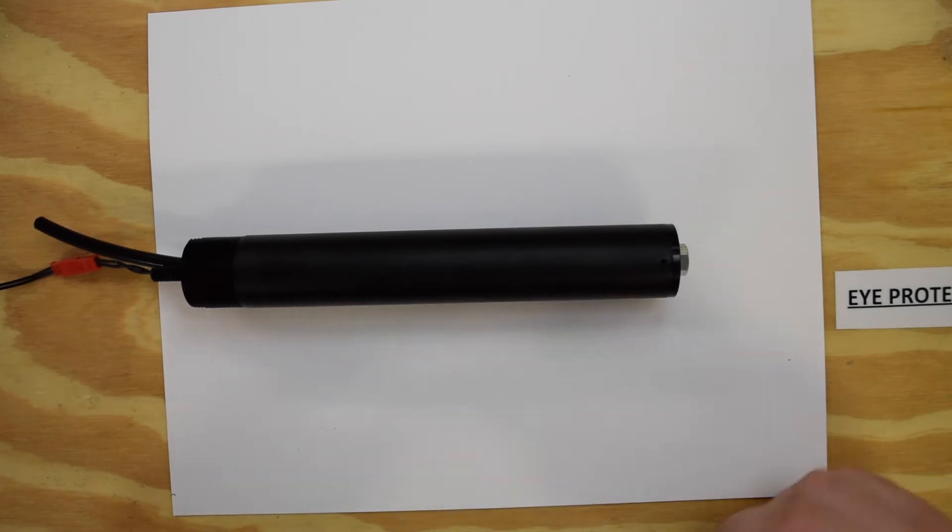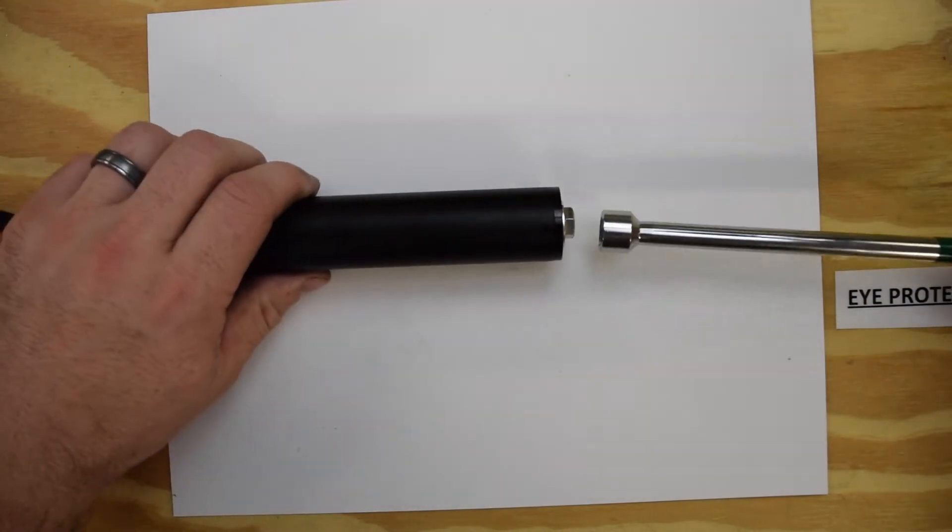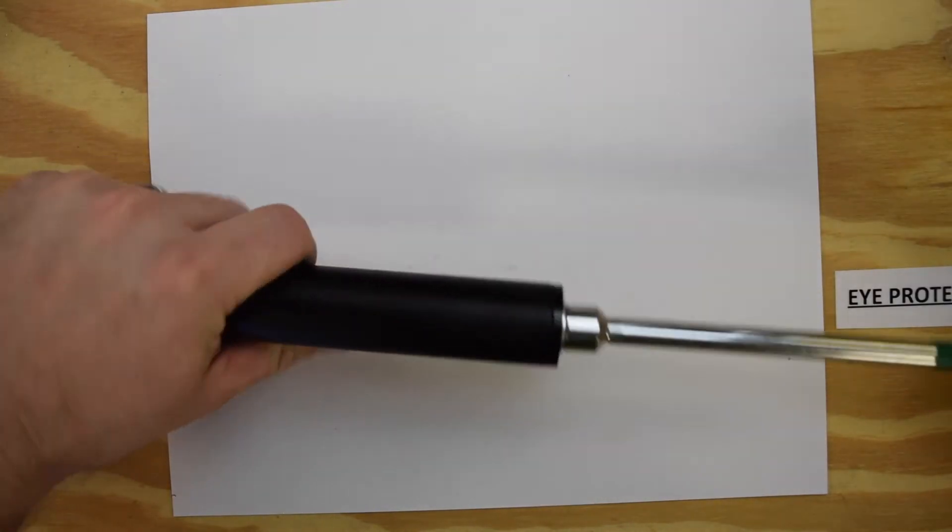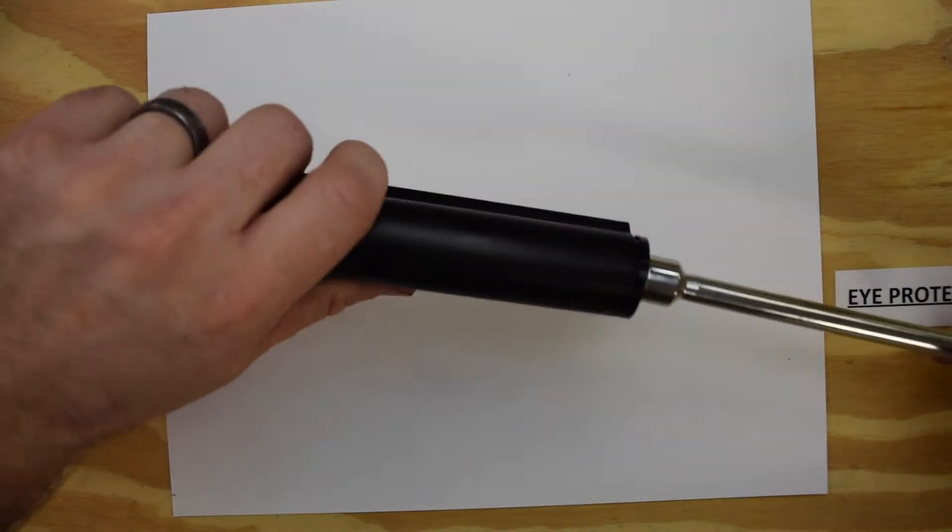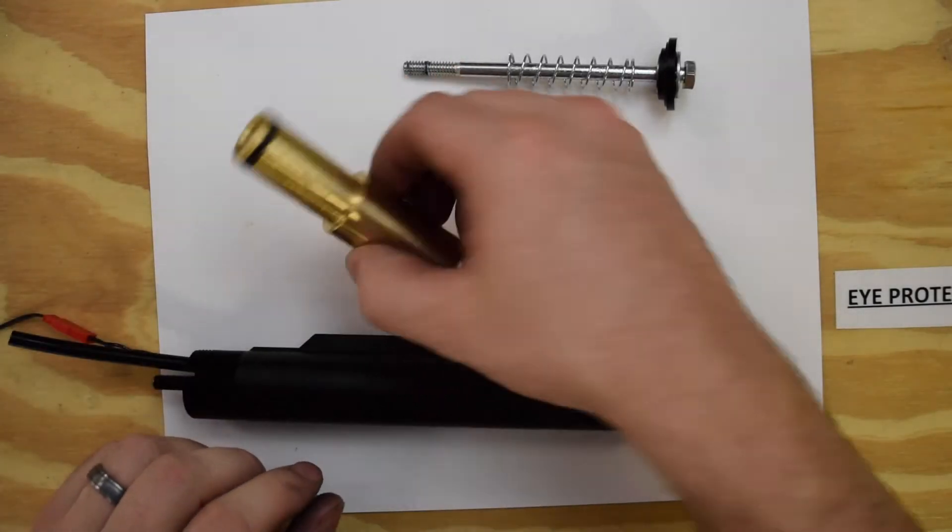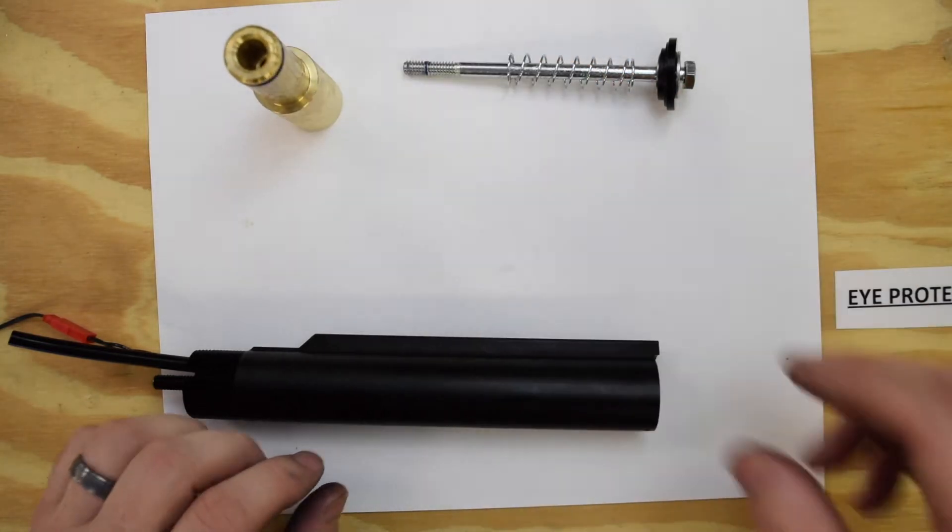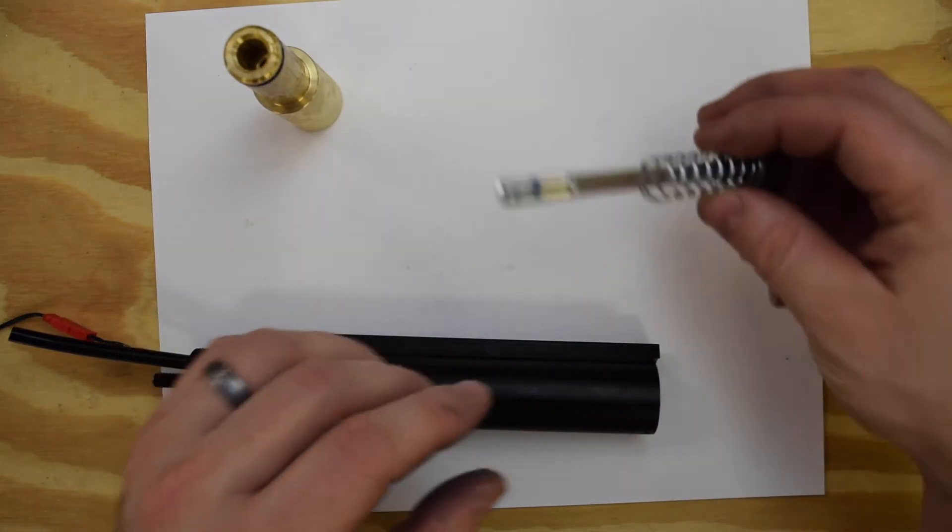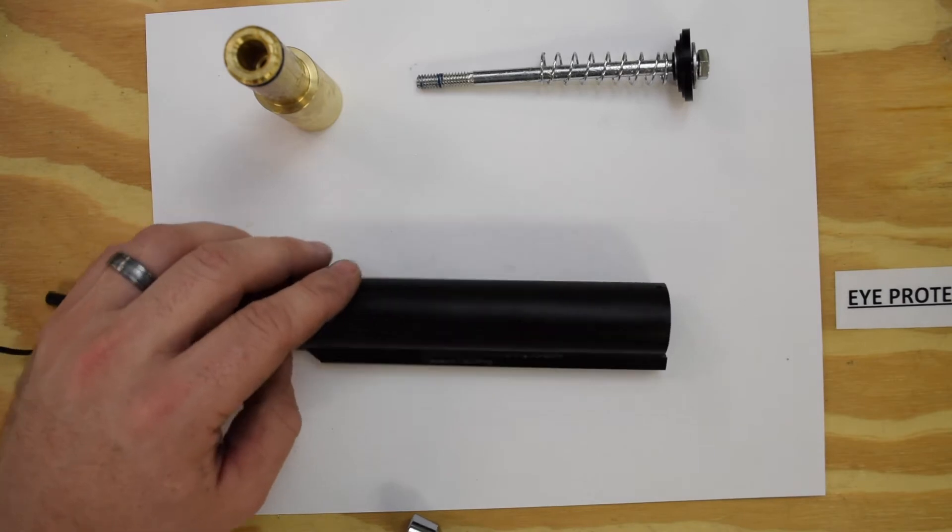We're going to start with a 7/16 wrench or driver as we have in this case. We're just going to loosen this up, and that lets us pull out the whole sliding mass spring system.